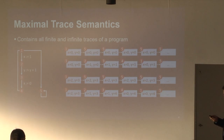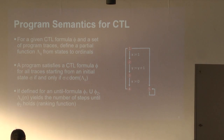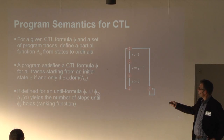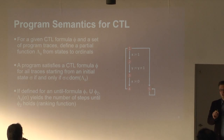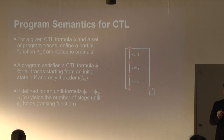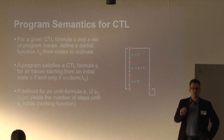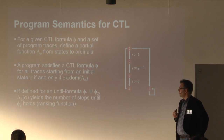Based on this maximal trace semantics, we define a concrete program semantics specific to a given CTL formula. Given formula phi and the set of program traces from a given starting state, we define a partial function lambda from states to ordinals. The domain of that function tells us for which states the formula actually holds — if a starting state is in the domain, then phi holds for that starting state.